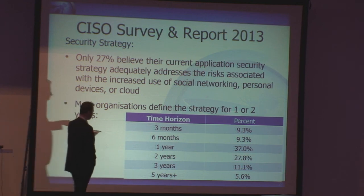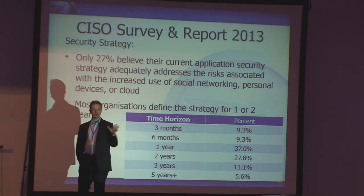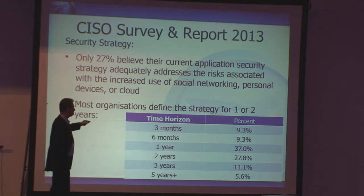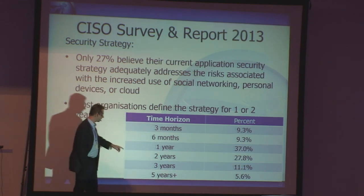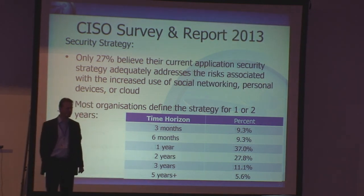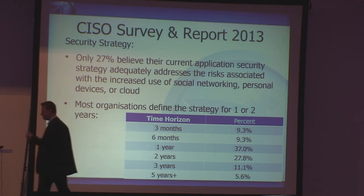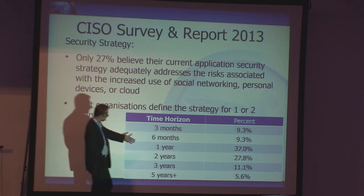Another interesting bit was for how long people plan. A year would seem fairly common, but there are a number of people with a planning horizon of only three months, while others — about 5% — have a five-year plan. I found this quite useful in terms of recognizing that at least some people have a long-term perspective when making investments.